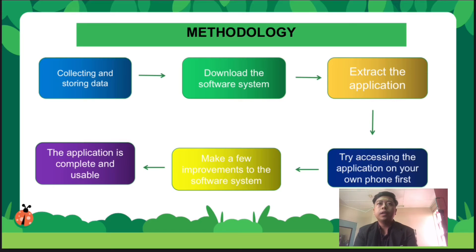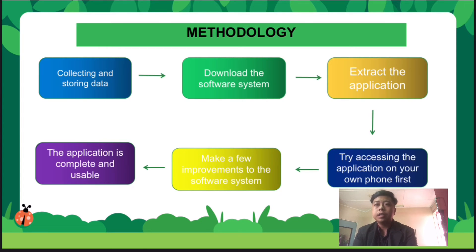For the methodology, we have six steps on how we completed our product. First, collecting and storing the data. Second, we downloaded the software system. Third, extract the application. Fourth, try to run the application on our phone first. Fifth, make a few improvements to the software system. And the last step, the application is complete and usable.